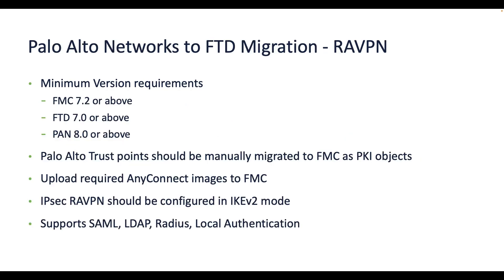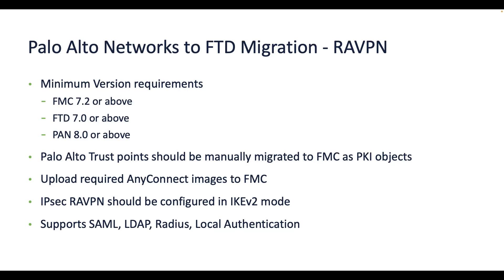The tool now also supports Palo Alto firewall Remote Access VPN configuration migration to FTD, as long as the target FMC is 7.2 or above, FTD is 7.0 or above, and the Palo Alto firewall is 8.0 or above. Supported authentication methods include SAML, LDAP, RADIUS and local authentication, and trust points from PAN need to be migrated manually as PKI objects on FMC. Currently, CAC and certificate-based authentication is not supported on the tool.